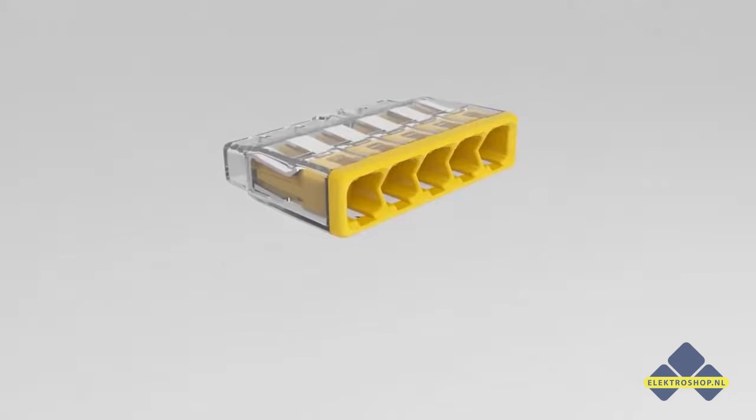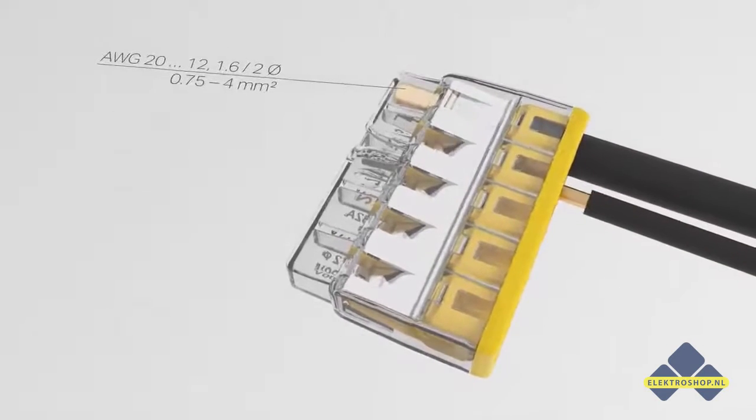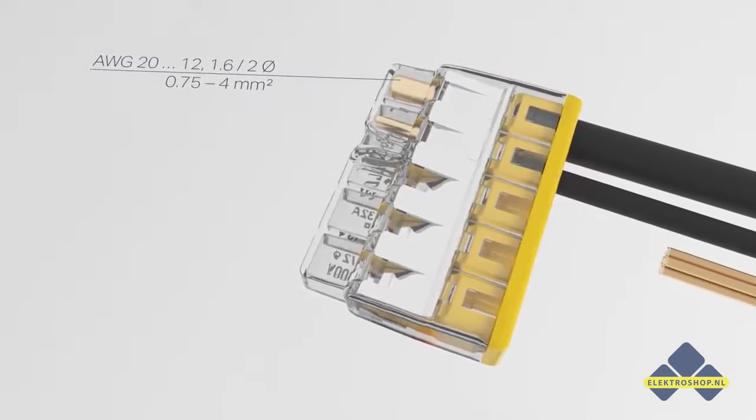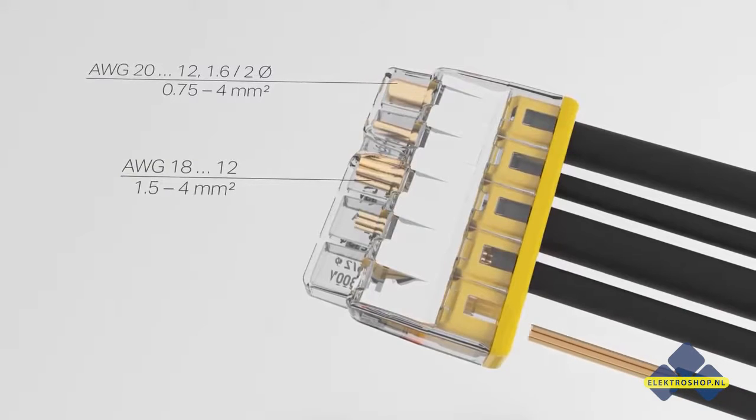Solid conductors with cross sections ranging from 0.75 mm² to 4 mm² and stranded conductors from 1.5 mm² to 4 mm² can be reliably connected just by pushing them in.